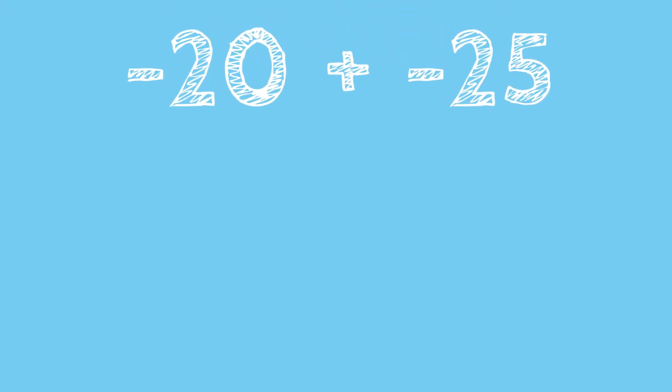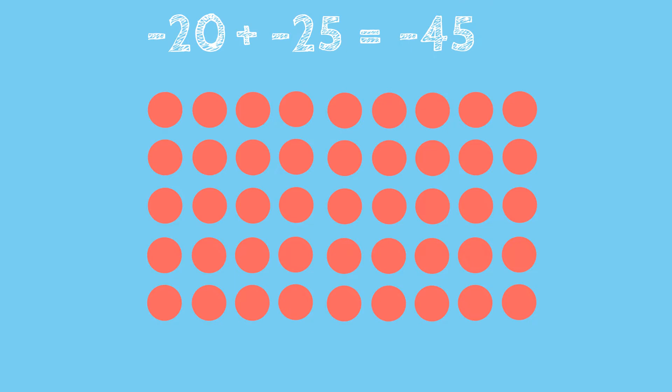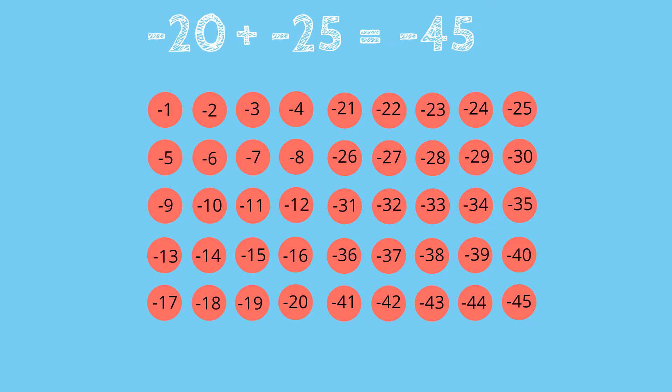In the next example, we will be adding negative 20 plus negative 25. If we notice, both numbers have negative signs, which means that we will not be forming any zero pairs. We can simply combine all of our negatives. Negative 20 plus negative 25 is equal to negative 45. That would be the same as 45 red counters or 45 red ants.